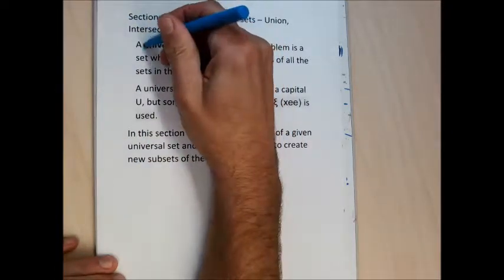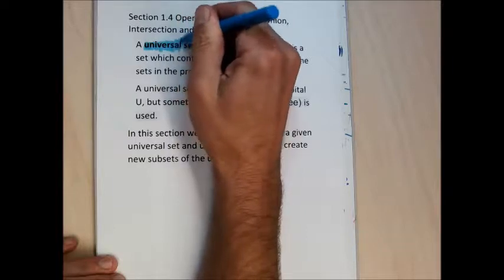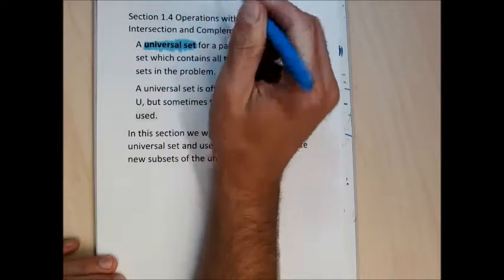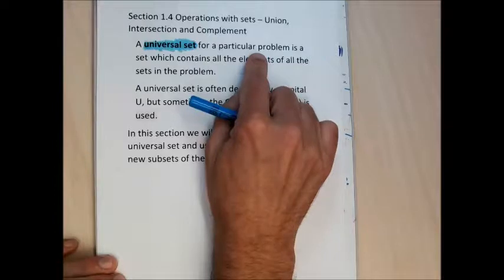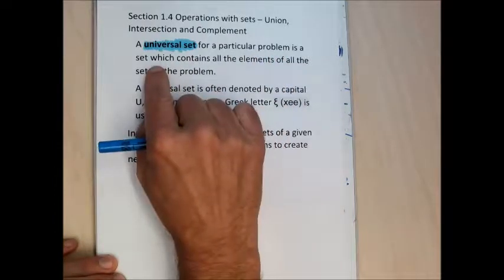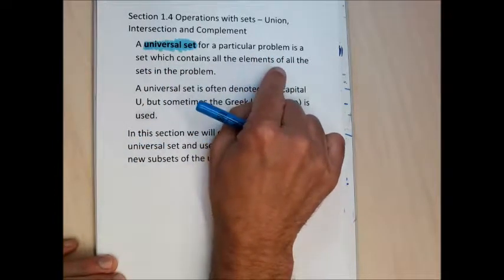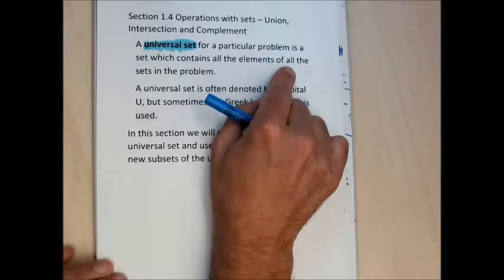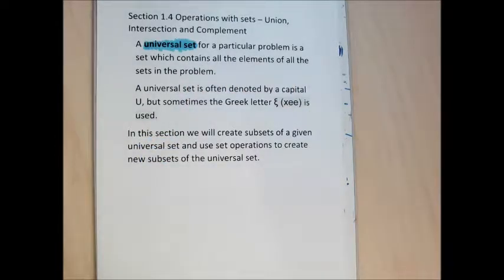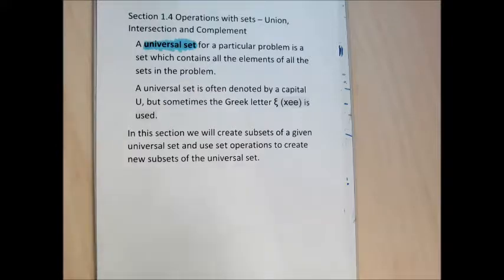A universal set is unique to a group of problems. A universal set for particular problems is a set that contains all the elements that all the sets in that problem are made up from. That's a pretty rough definition, but once we get to the examples it's going to be obvious what a universal set is. A universal set is some big set that we're going to make sets from — it's some global set in some sense.